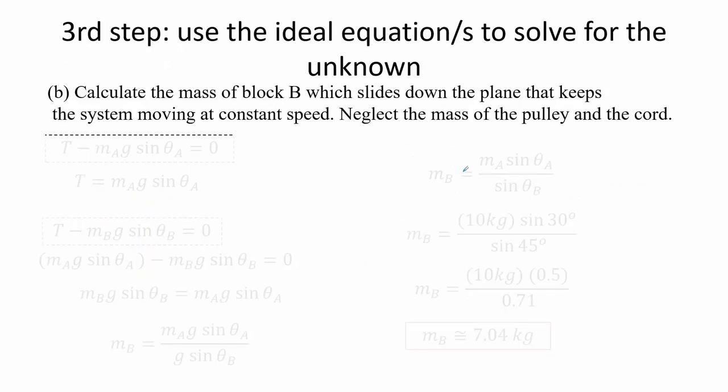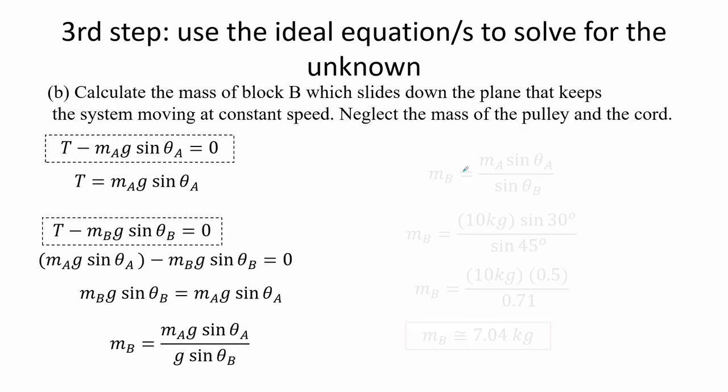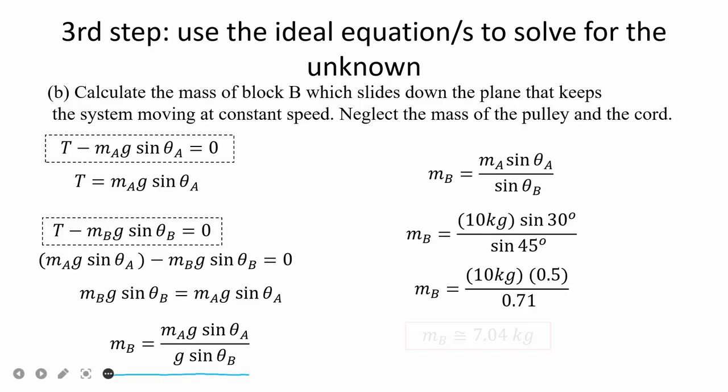The third step is to use the ideal equations to solve for the unknown. Here mass Mb is calculated by using the equations obtained earlier and substituting them to determine an expression for the unknown. Mb is equal to the ratio of the mass A times G times sine of theta A over G times sine theta B. The value of mass B is approximately equal to 7 kilograms.